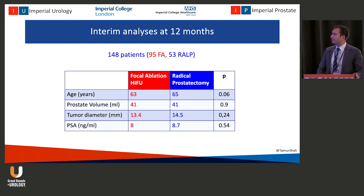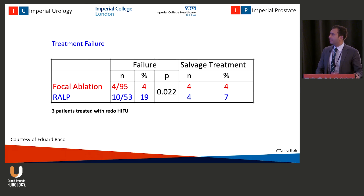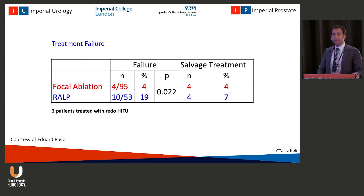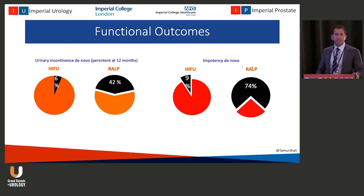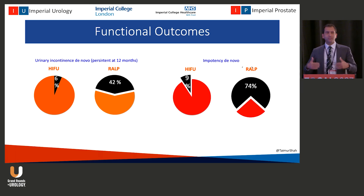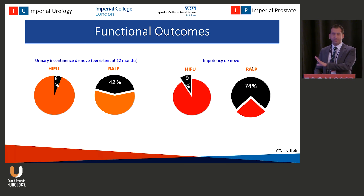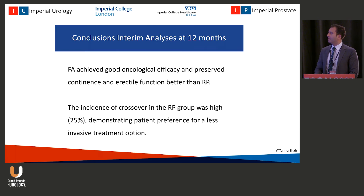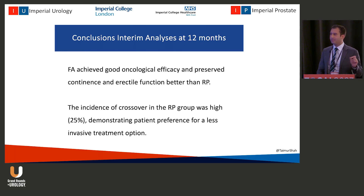The two groups were adequately matched for all parameters. Looking at salvage treatment-free survival, the same number of patients ended up having salvage treatment, though this is an early interim analysis. Three patients needed a repeat HIFU procedure. There was again a big difference in functional outcomes, validating what we've all been seeing between focal treatments and radical prostatectomy. We now have level one data to show patients about functional outcomes. They concluded that focal ablation has good oncological efficacy and preserves function, but the crossover of almost one in four is a problem, showing patients prefer the less invasive option.